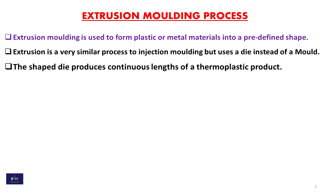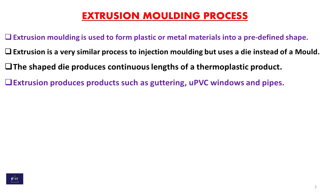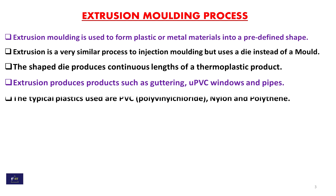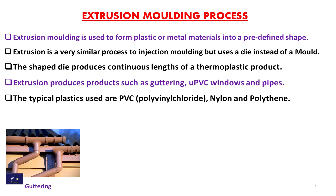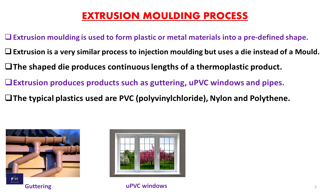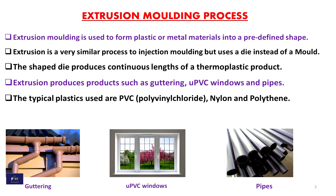The die produces a continuous length design of the thermoplastic product. Extrusion produces products such as guttering, UPVC windows, and pipes. The typical plastics used are PVC, polyvinyl chloride, nylon, and polythene. This is the image of guttering, UPVC windows, and pipes.